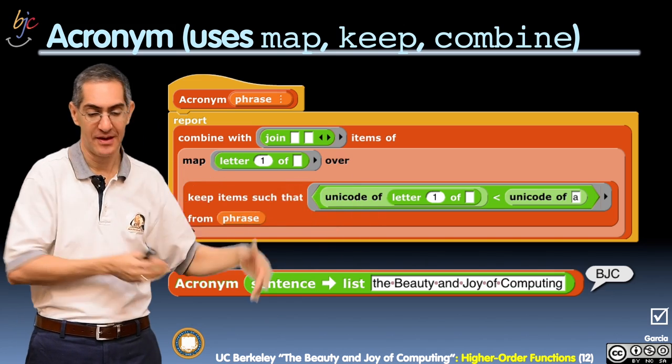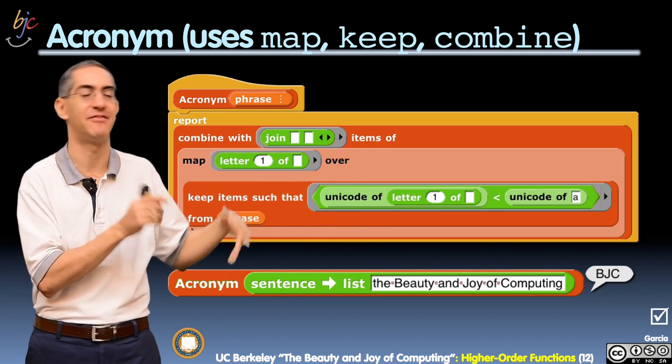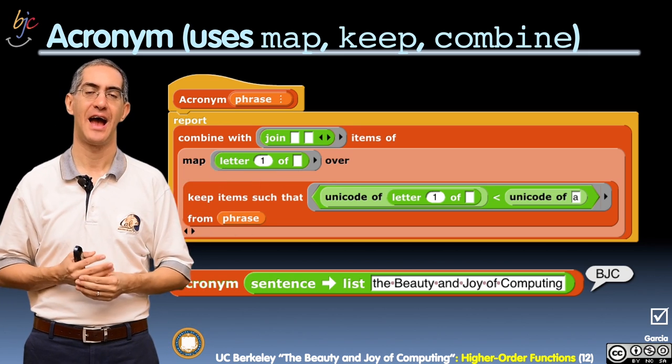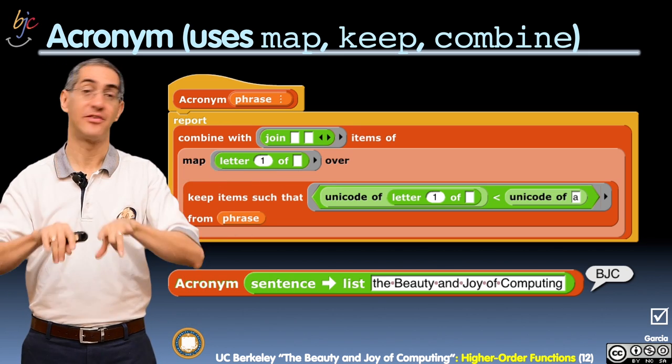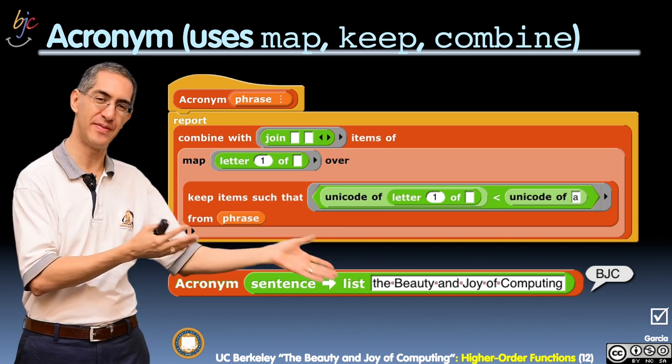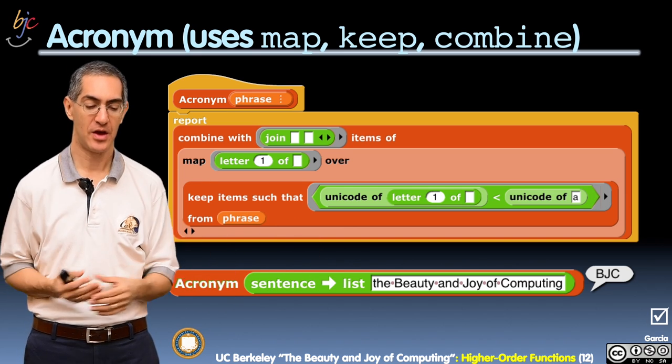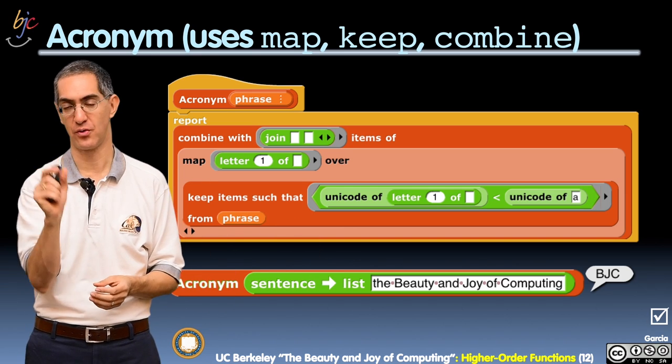So the innermost function is the keep. Keep items such that, and there's a little bit of complexity of how we test whether something's lowercase. There is no simple lowercase function. I could have written that, but I actually want to reveal how we do that, which is we ask for the unicode value.